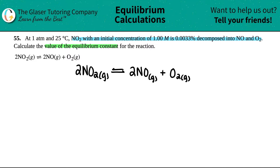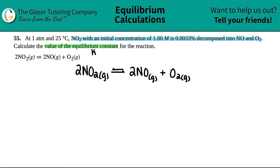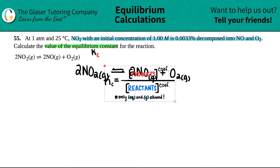We need to find a number for the equilibrium constant — that's a capital K value. In this chapter we've learned two: Kc or Kp. Since they gave us a molarity of 1.00 M for NO₂, we have a concentration, so we're going to find Kc. Let's put the Kc formula on the screen.